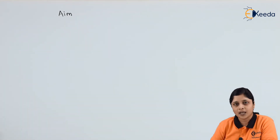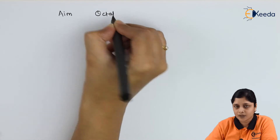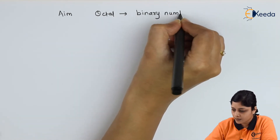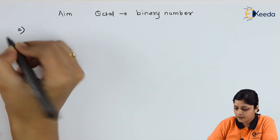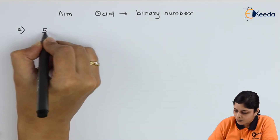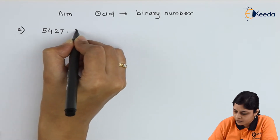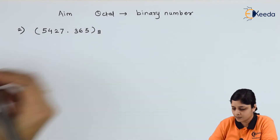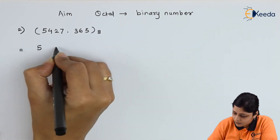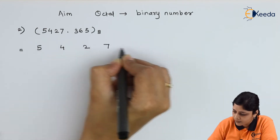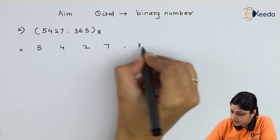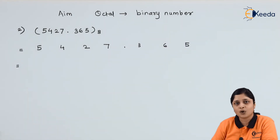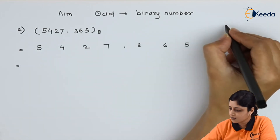Again, write down the aim: you have an octal number, convert it into binary number. Second example: 5 4 2 7 point 3 6 5 to the base 8. Write down again with space: 5, 4, 2, 7, decimal point, 3, 6, 5. Write down the binaries of all the terms.